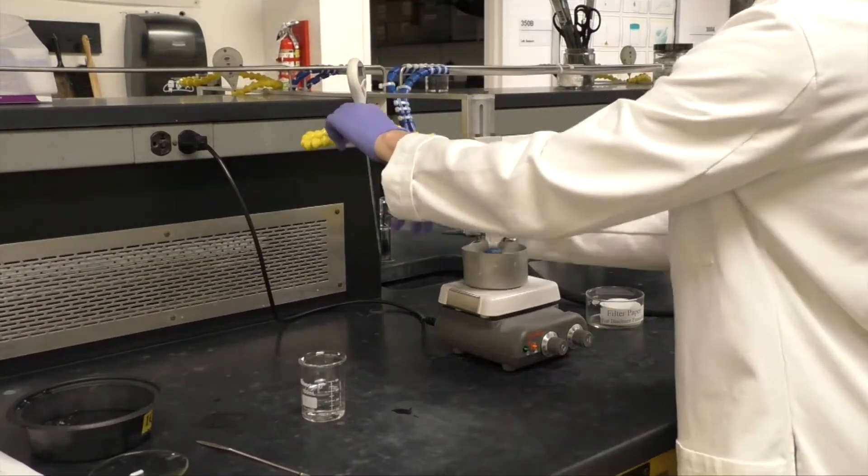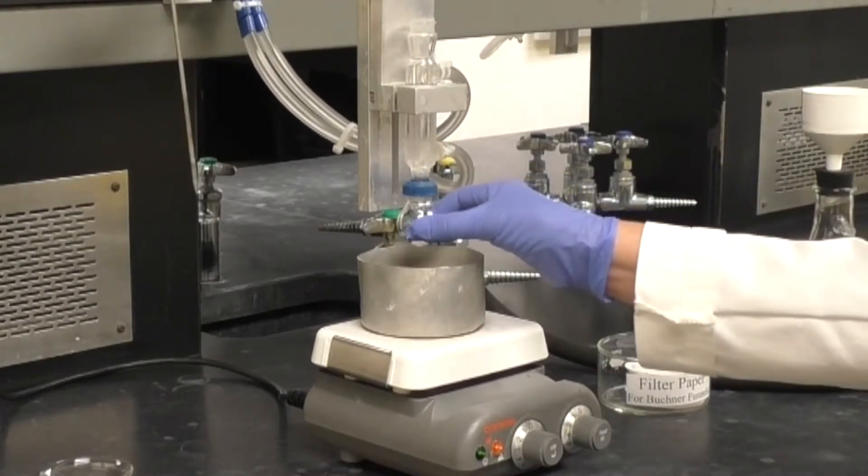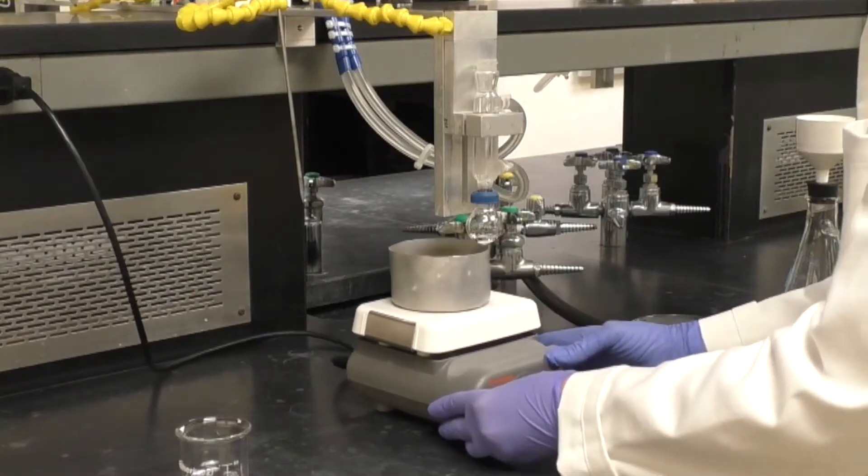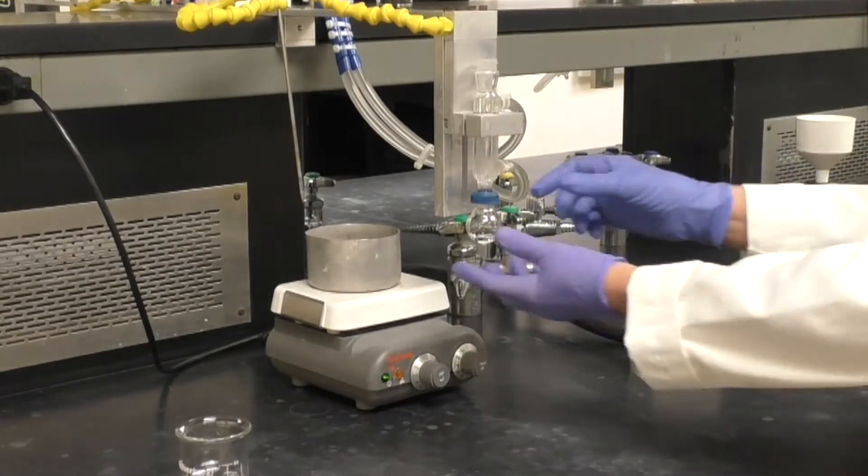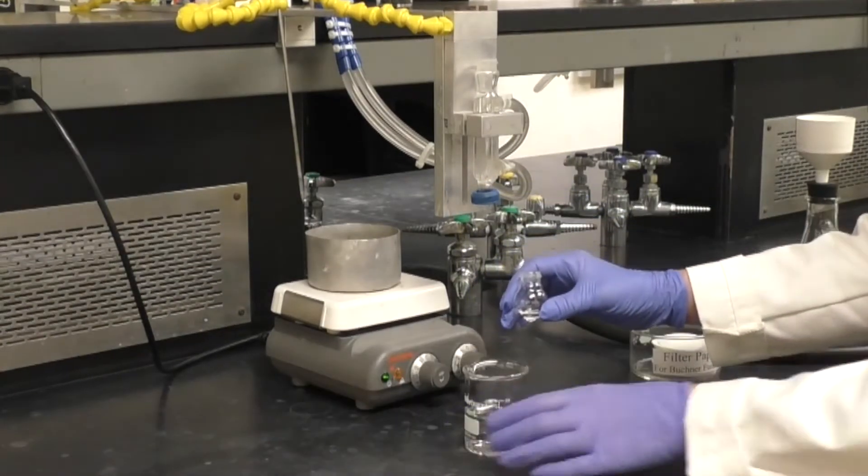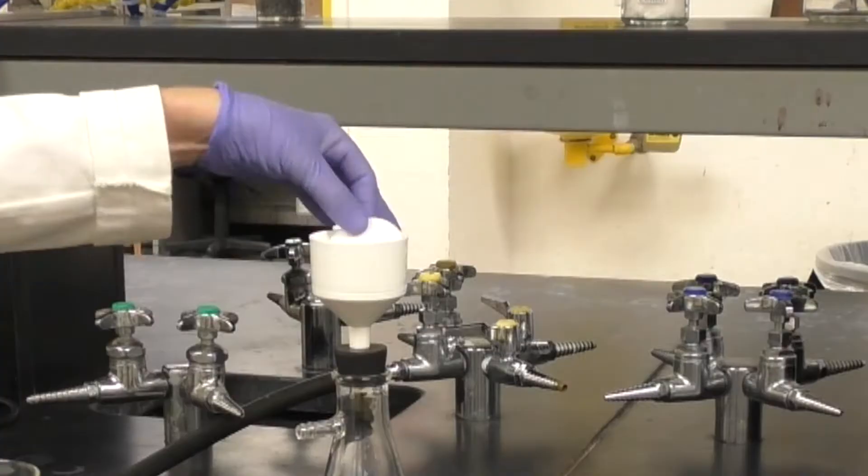After 20 minutes, pour your reaction into the 50 milliliters of water. Note that the round bottom flask will only be warm to the touch due to the low temperature of the water bath. As you pour your reaction mixture into the water, a precipitate will form. This is your anhydride product.